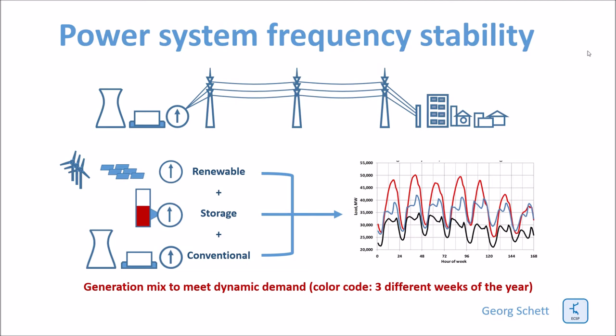In the past, only the load was variable and the demand side had to be met by a controllable set of generation plants. But today, also the generation side of the equation is more and more variable and less well controllable. The wind does not always blow when needed, and the sun is not always shining when the power is needed.